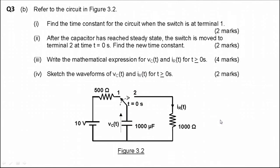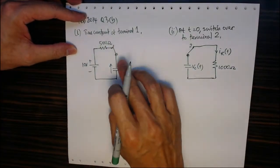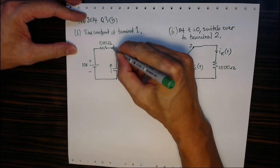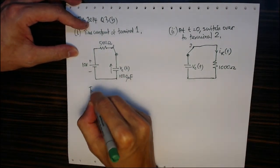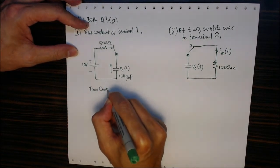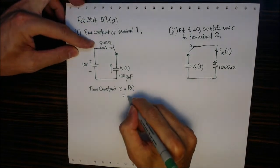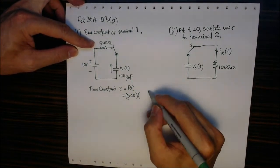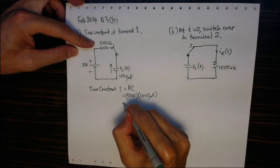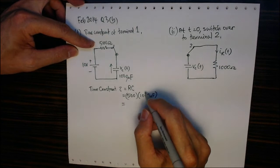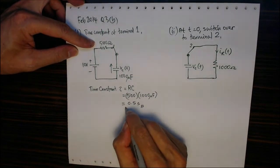To answer this question, I have drawn the circuit when the switch is at position 1. The time constant τ is given by RC, which equals 500 ohms multiplied by 1000 microfarads, giving a constant of 0.5 seconds. This is the time constant when the circuit is in terminal 1 position.